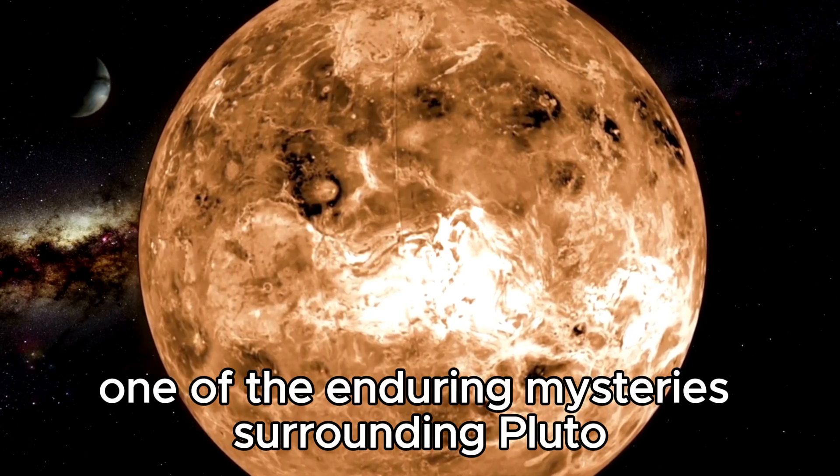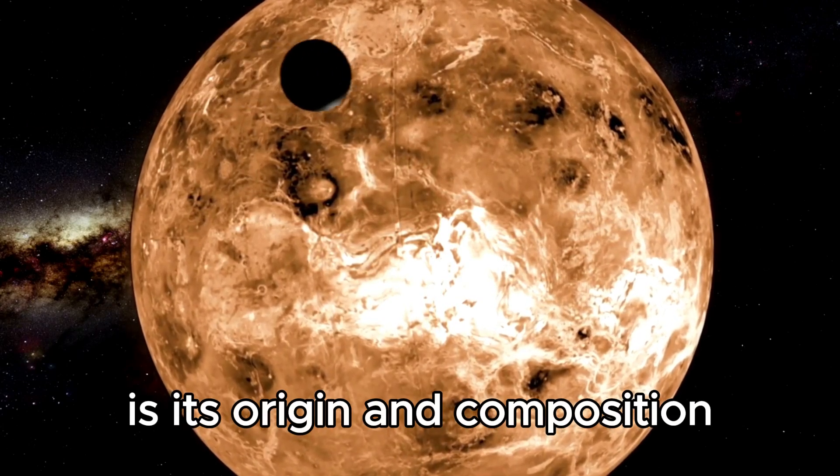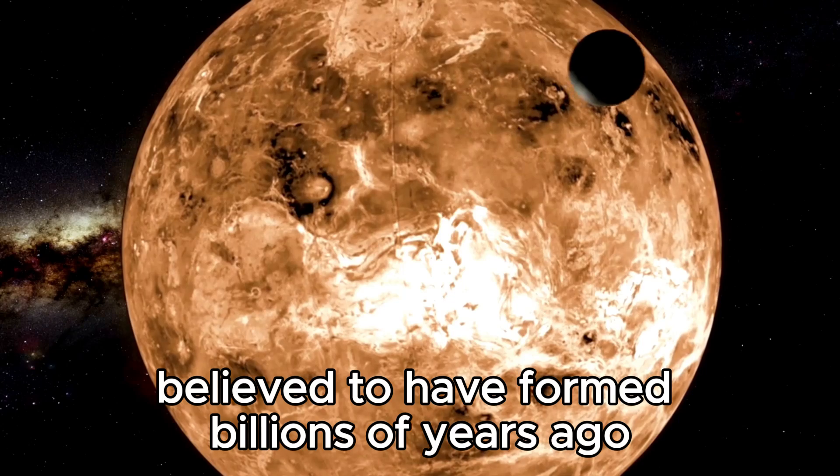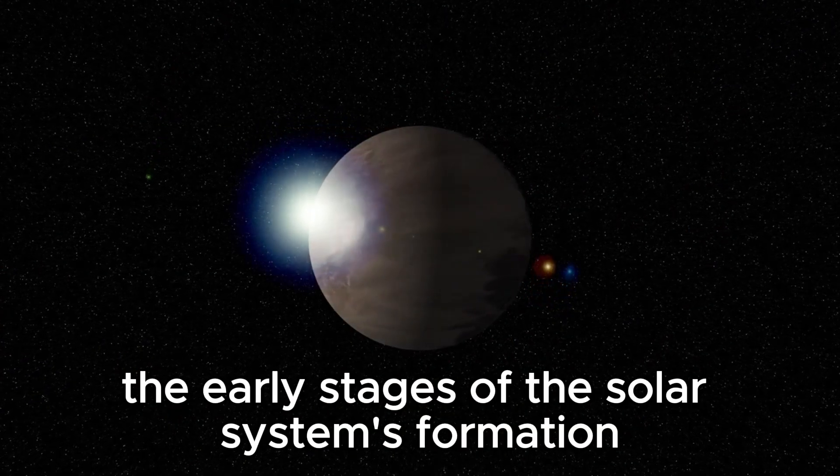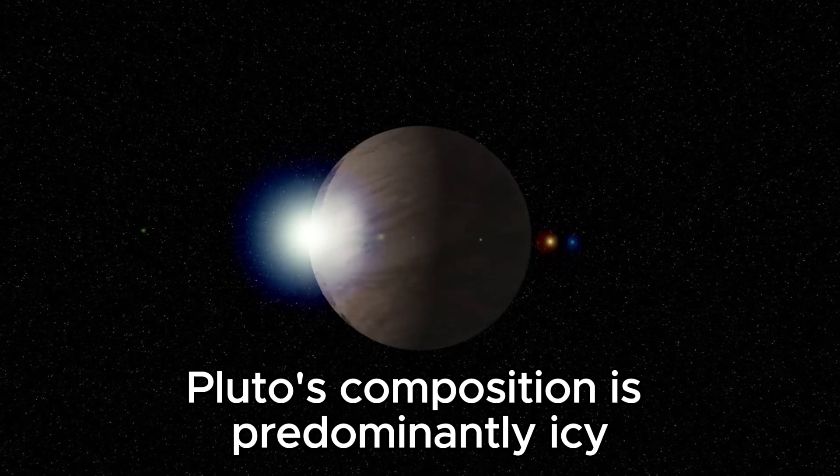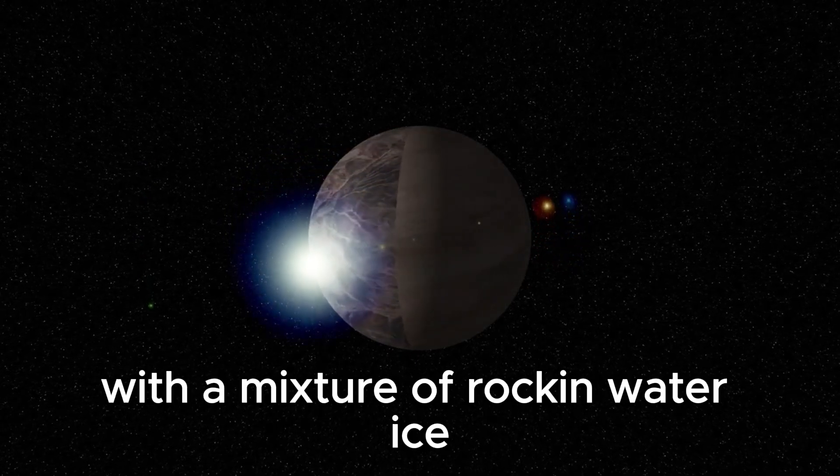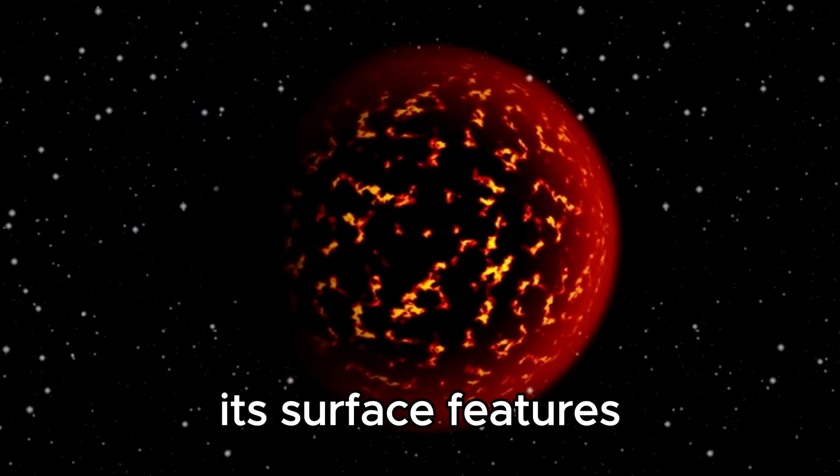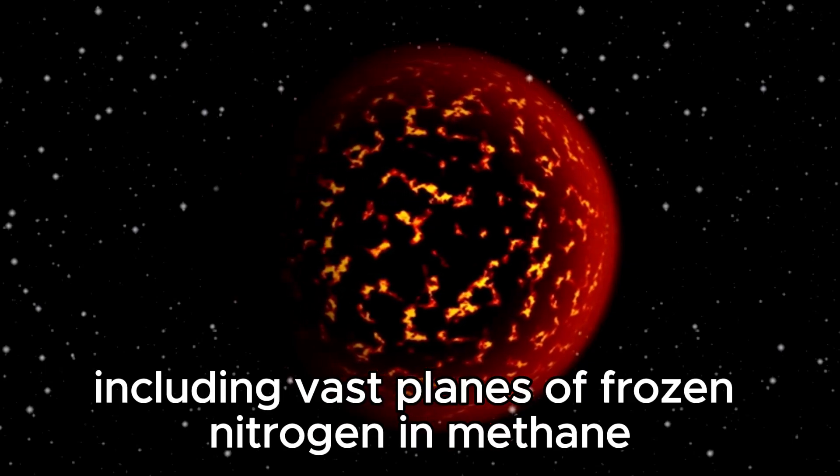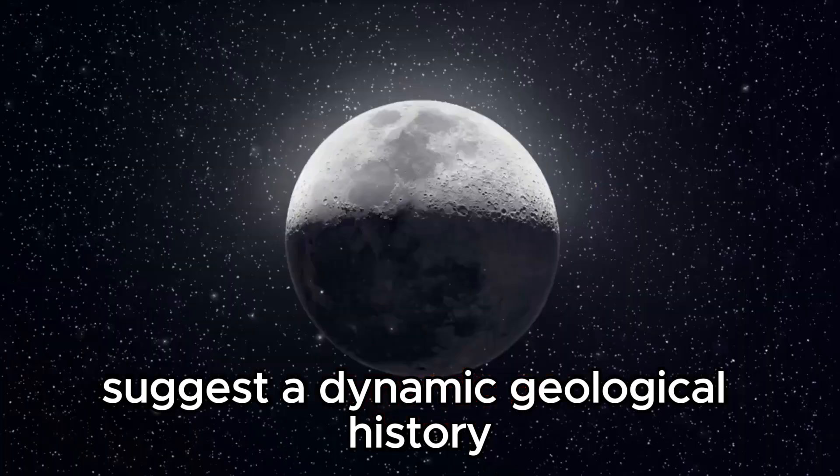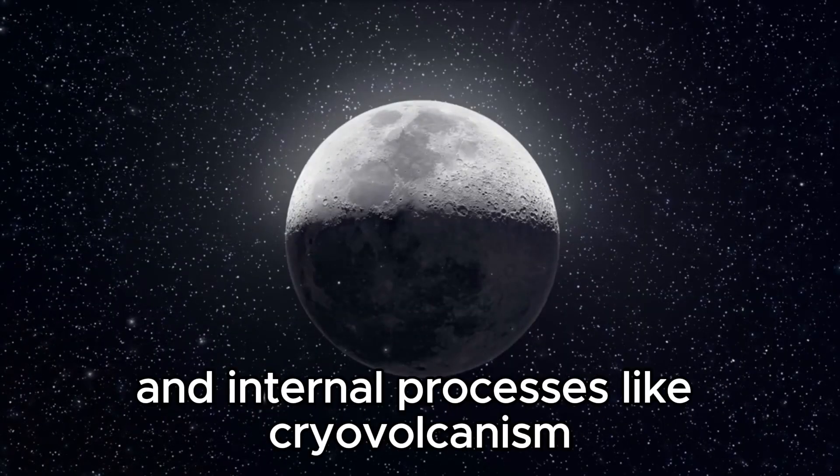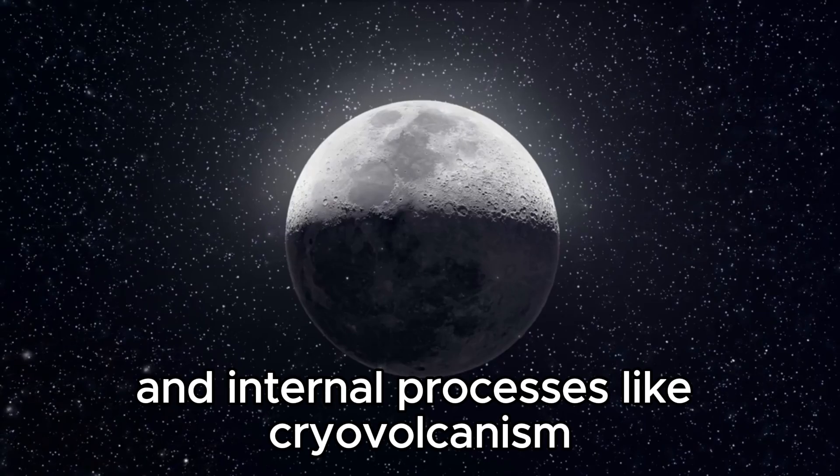One of the enduring mysteries surrounding Pluto is its origin and composition. Believed to have formed billions of years ago during the early stages of the solar system's formation, Pluto's composition is predominantly icy, with a mixture of rock and water ice. Its surface features, including vast planes of frozen nitrogen and methane, suggest a dynamic geological history influenced by external forces such as impacts and internal processes like cryovolcanism.